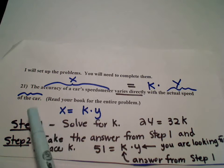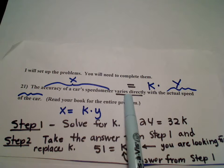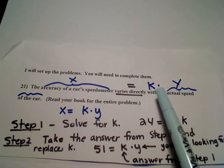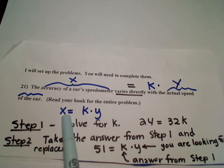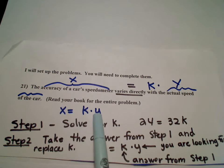In problem 21, if you notice, don't forget to put the equal above the varies. We have this directly, so therefore I know I'm going to end up multiplying k times something. And here's the formula that you should have set up: x is equal to k times y.